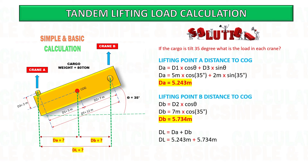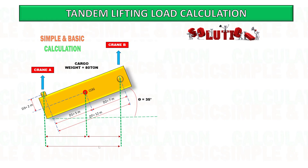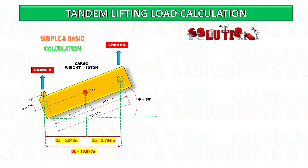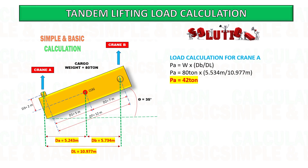Based on these new dimensions, we will calculate the loading in crane A and crane B. Once we get the new distance of lifting point A and B, we can start to calculate the load in each crane based on this value. See the calculation below — you can pause the video and follow along.